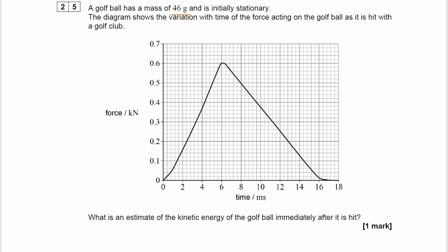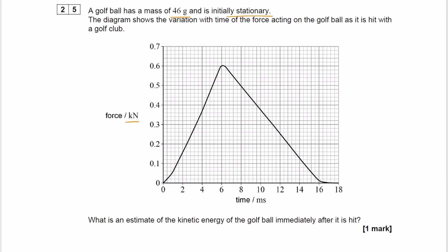A golf ball has a mass of 46 grams and is initially stationary. The diagram that we have shows the variation of force in kilonewtons against time for the force acting on the golf ball. We want to work out an estimate for the kinetic energy of the golf ball after it is hit.